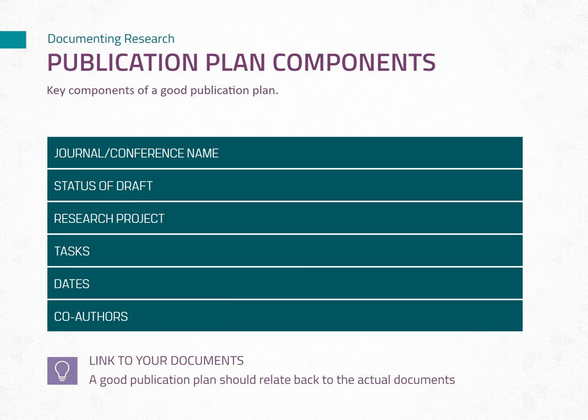A well-structured plan will help you stay organized and on top of your writing goals. Key components include: Journal and Conference Names — list the specific journals and conferences you intend to submit your work to, including links to their websites and any relevant calls for papers. Research Topic — clearly define the research topic or project that you plan to publish. Draft Status Tracking — establish a system for tracking the status of your draft documents, using status phases such as idea, abstract submitted, draft, internal review, draft submitted, reviewer responses received, accepted, published, or denied. This will enable you to monitor the progress of your publications and ensure timely follow-up.